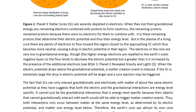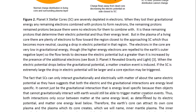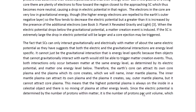For details about how the protons and electrons work, you may look at Book 3 entitled Planet X Revealed: Gravity and Light. When the electric potential drops below the gravitational potential, a matter-creation event is induced. If the stellar core is extremely large, the drop in electric potential will be large and a core ejection may be triggered — a more energetic matter-creation event. The fact that stellar cores can only interact gravitationally and electrically with matter of about the same electric potential suggests that both the electric and gravitational interactions are energy-level specific. It cannot just be the gravitational interaction that is energy-level specific, because then objects that cannot gravitationally interact with Earth would still be able to trigger matter-creation events. Thus both interactions only occur between matter at the same energy level, as determined by its electric potential, and matter one level below.